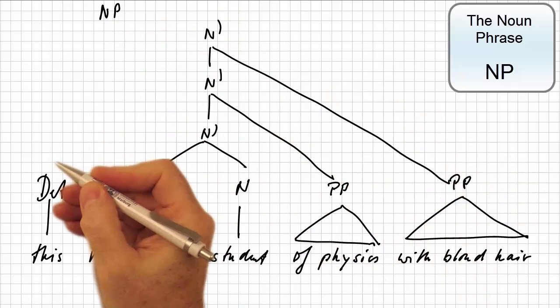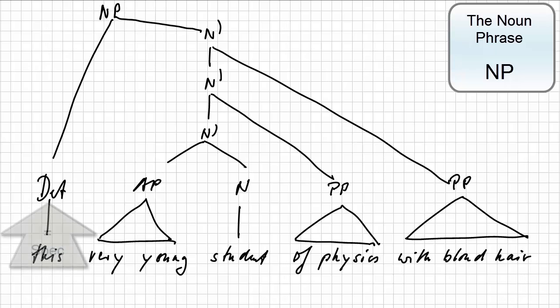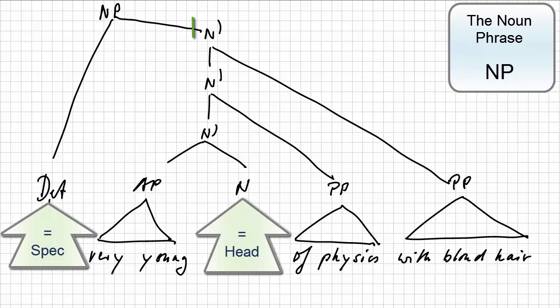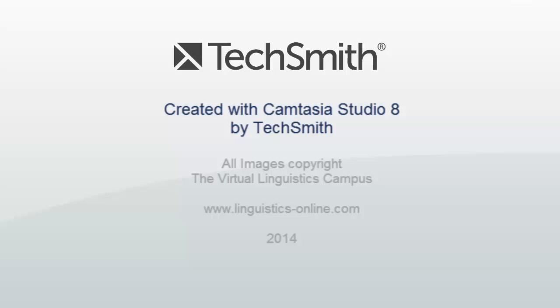So, this is the structure of the noun phrase. A determiner as the specifier, the noun as the head, and an internal n-bar node, which can theoretically infinitely be expanded.